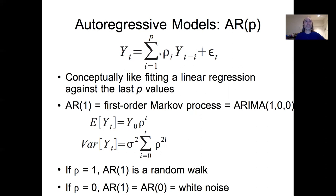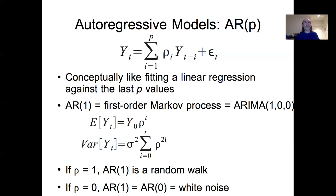One really important special case of the autoregressive model is the AR1 model — the first-order autoregressive model — which describes a Markov process. An AR1 is Markovian because it only deals with the previous lag. So it's just Y_t equals rho times Y_{t-1} plus some error. Another important special case: if rho equals 1, then that AR1 model is just a random walk model, the same important null case we saw in state space models. If rho is 0, the AR1 is the same as AR0 — it gives zero weight to the past and is just white noise. Anything between 0 and 1 is some degree of weighting.